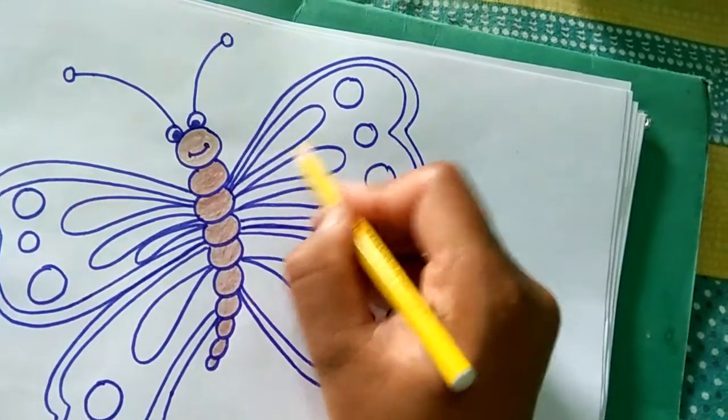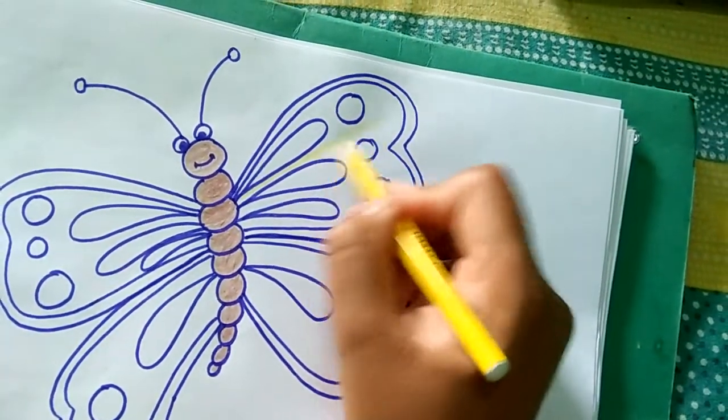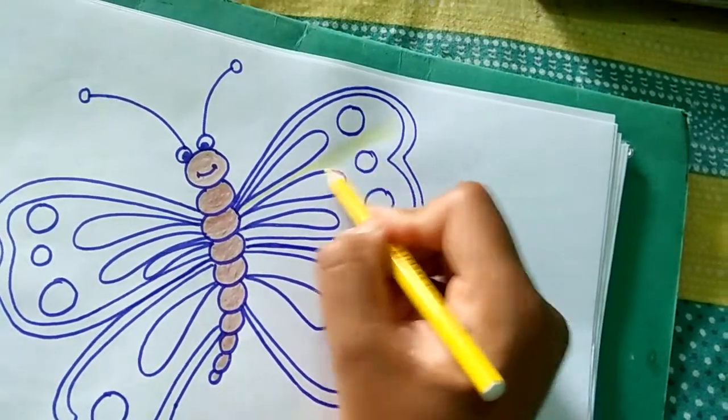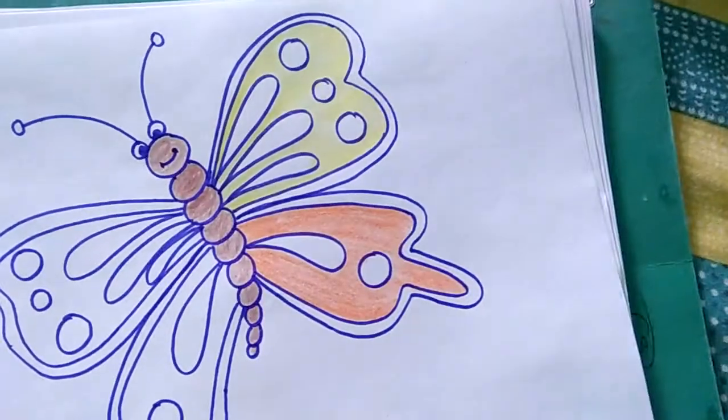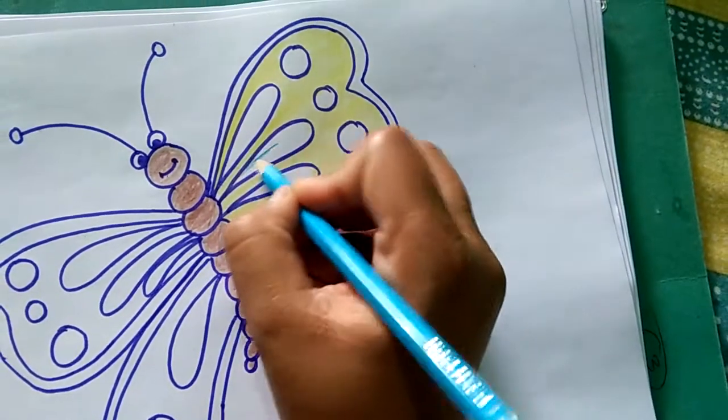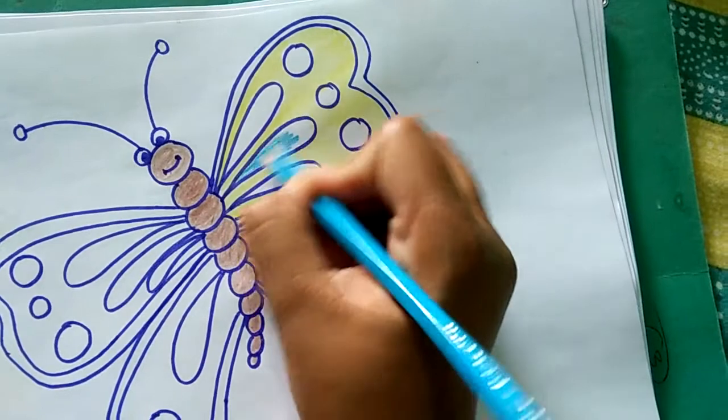Class, first we will color the wings in the back. We will color the wings, okay? We will color it sky blue.